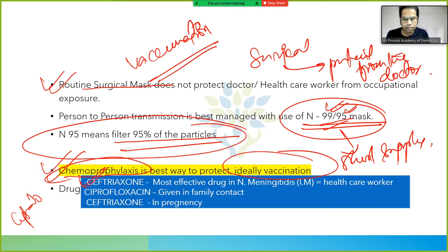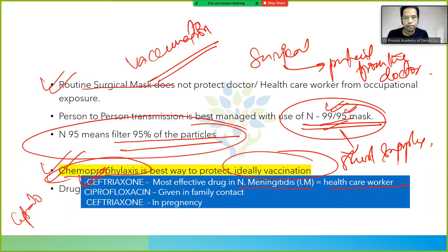Ceftriaxone is the most effective drug for chemoprophylaxis in Neisseria meningitidis — it is given to healthcare workers. For family contacts, we give ciprofloxacin, which is a fluoroquinolone.